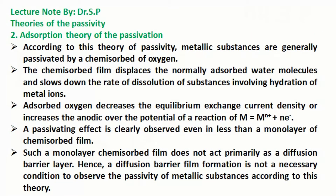Adsorption Theory of Passivation. According to this theory of passivity, metallic substances are generally passivated by a chemisorbed layer of oxygen. The chemisorbed film displaces the normally adsorbed water molecules and slows down the rate of dissolution of substances involving hydration of metal ions. Adsorbed oxygen decreases the equilibrium exchange current density or increases the anodic overpotential of the reaction of the metal.